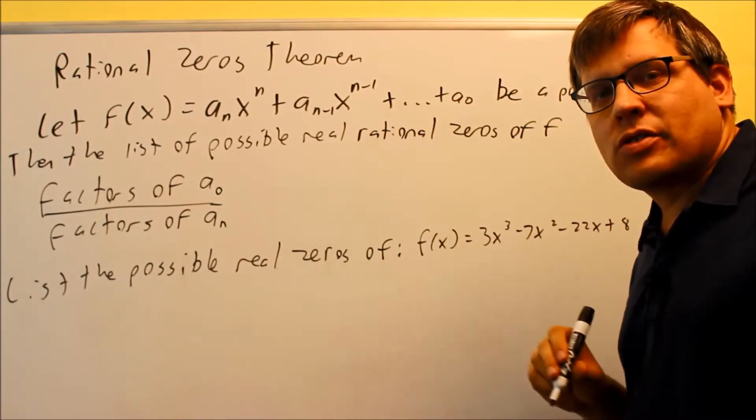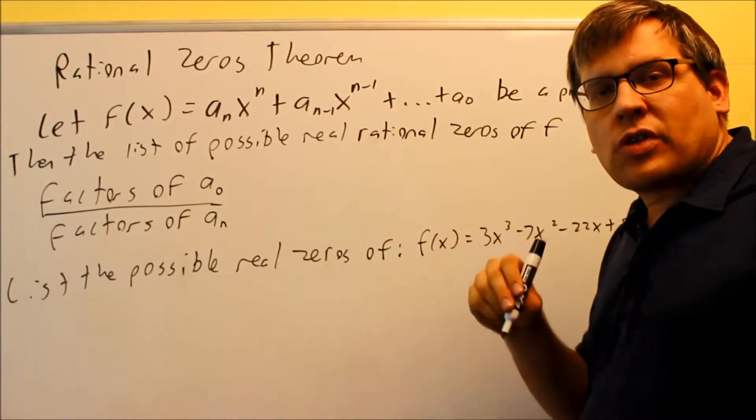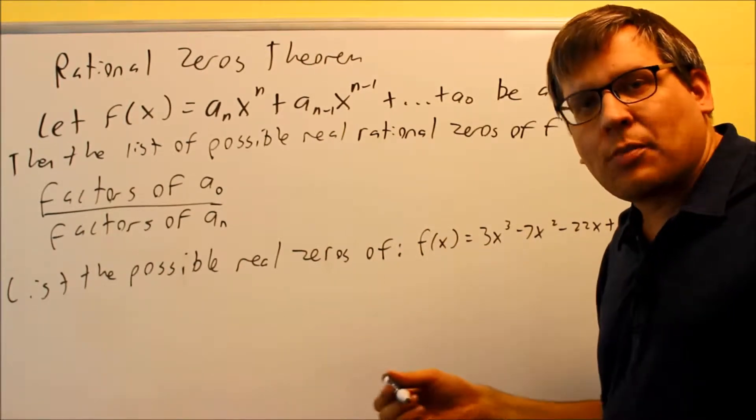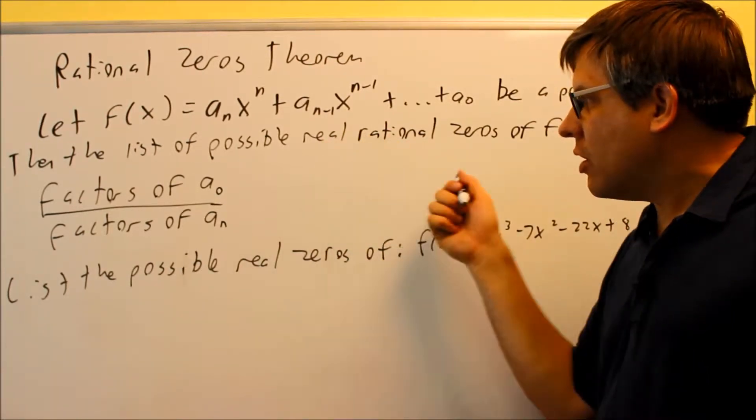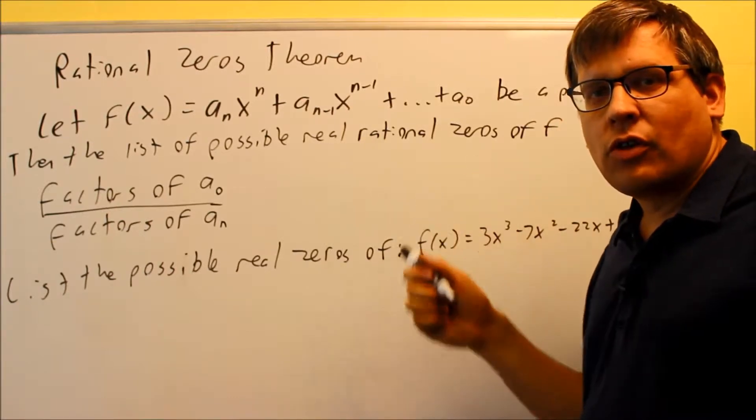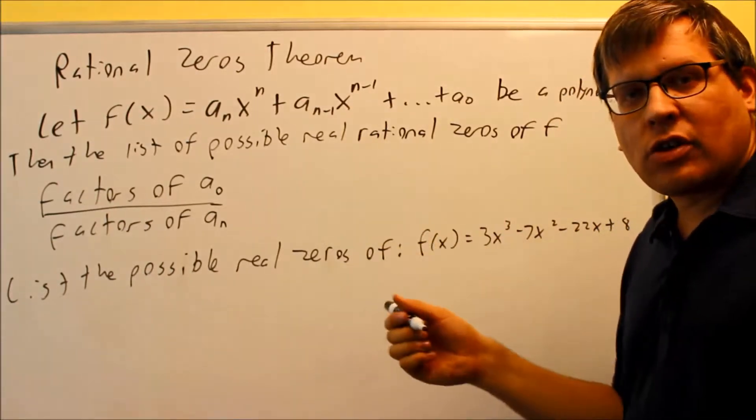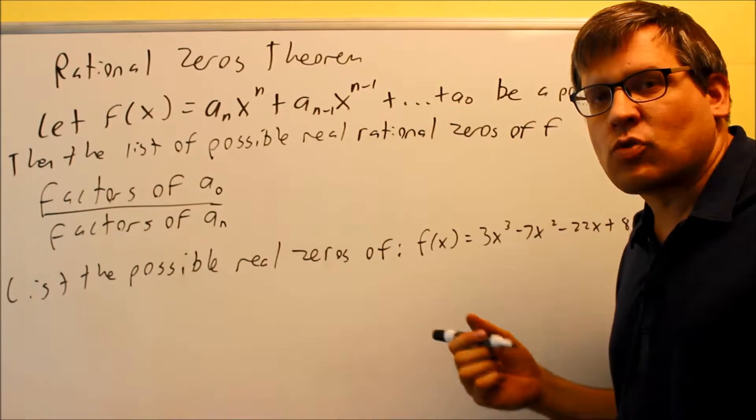So what does rational mean? Rational means that you can express a number as a fraction. So square roots would not be included in this. This list is only going to give you possible rational zeros where the graph's going to cross. So whole numbers and fractions is what this is going to give you.